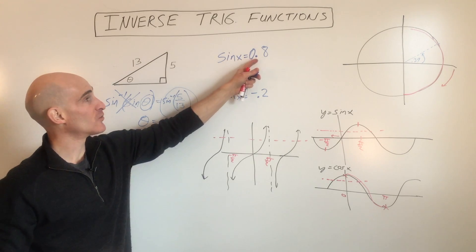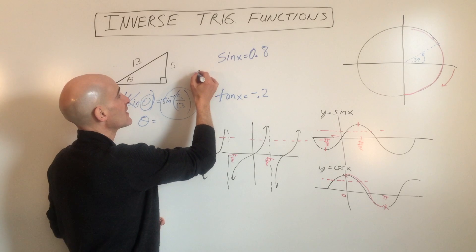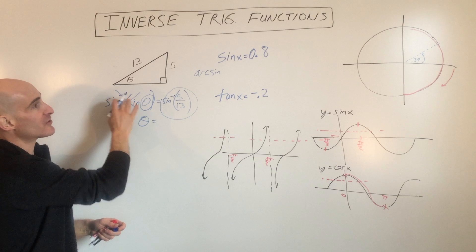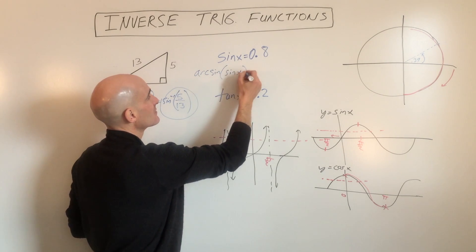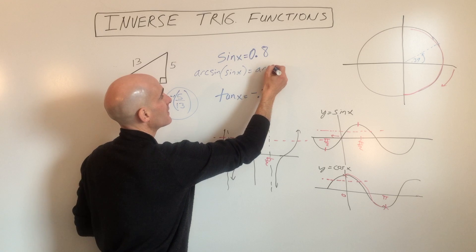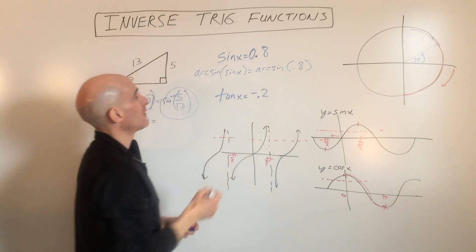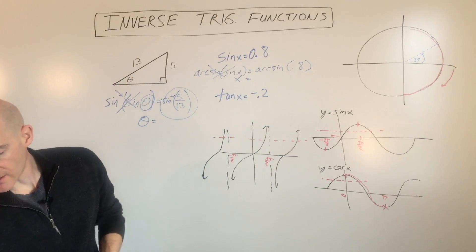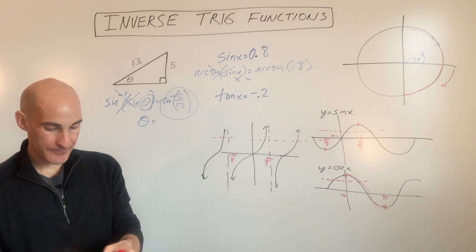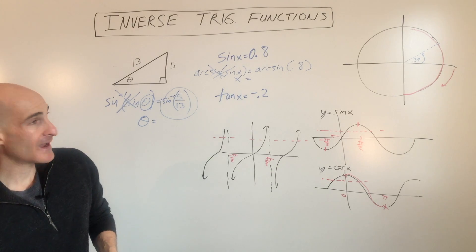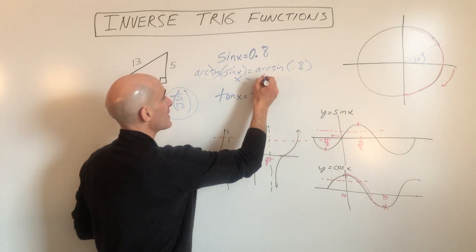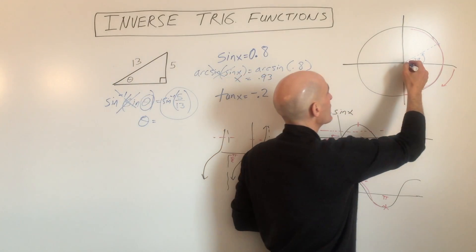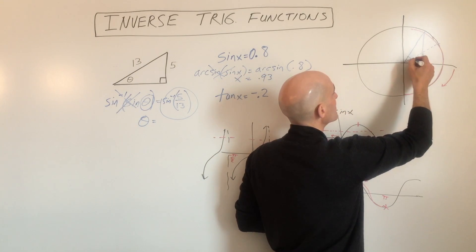Now let's solve some equations. We want to find out where sine equals 0.8. So we're going to take the arc sine — arc sine is the same as the sine minus one notation, the sine inverse. Arc sine of sine of x equals the arc sine of 0.8, and since these are inverses, we get x by itself. Going to the calculator, arc sine of 0.8 gives us approximately 0.93 radians — right about here on the unit circle.